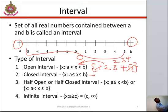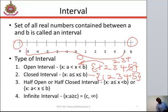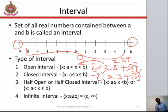Another one is closed interval. When we have a set containing elements 1, 2, 3, 4, 5, we call this a closed interval if 1 and 5 are inclusive when listing the elements of this set.